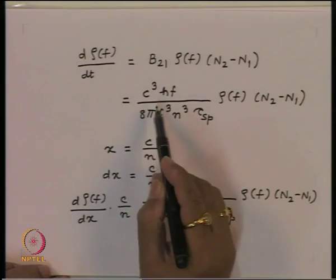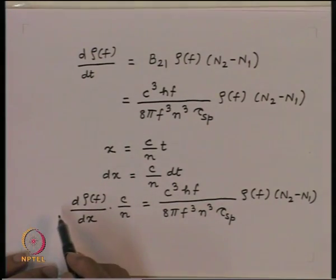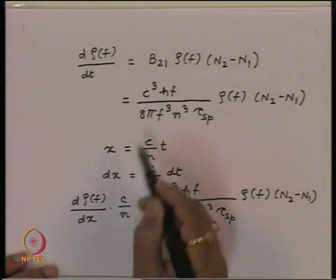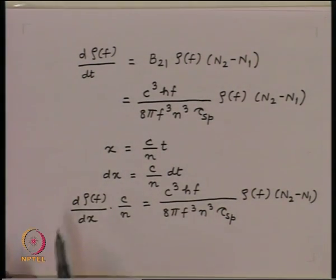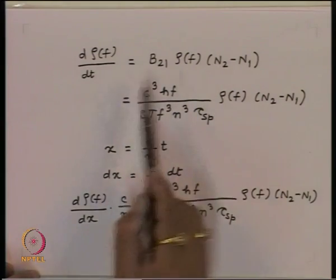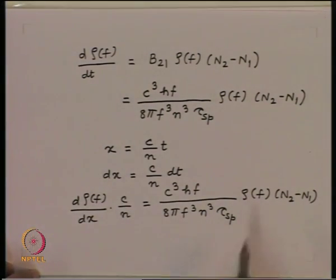We saw that when the photon is inside the material it is not stationary — it moves with the velocity of light. Therefore we have a distance travelled by the photon which is the velocity of light inside the material, which has refractive index N, multiplied by t. So we could convert the equation with respect to time into an equation in terms of distance x, which was further simplified to get a differential equation for the photon flux as a function of distance.